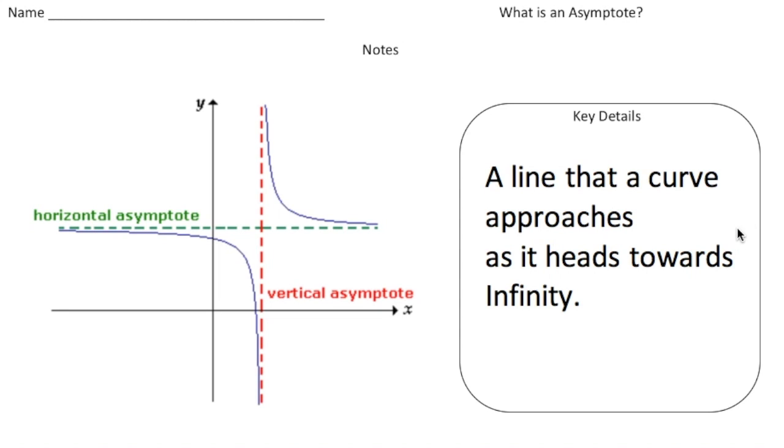So what exactly is an asymptote? An asymptote is a line that a curve approaches as it heads towards infinity.